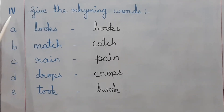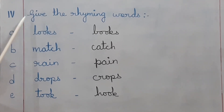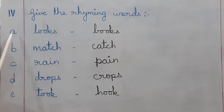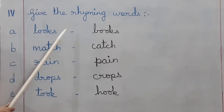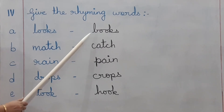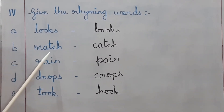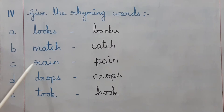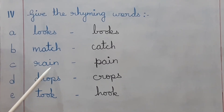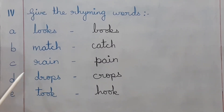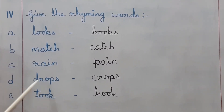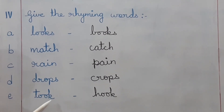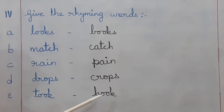Topic number four: give the rhyming words. A. Looks — books. B. Match — catch. C. Rain — pain. D. Drops — crops. E. Took — hook.